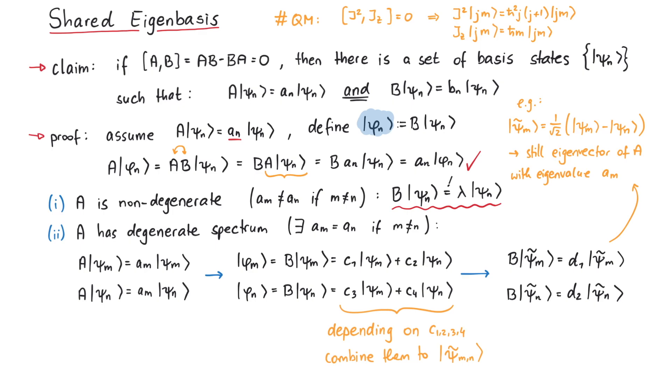In summary, the following two statements are equivalent. First, A and B commute. And second, A and B have a common eigenbasis. And that's pretty much it for this video. Thanks for watching.